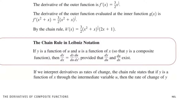If we use Leibniz notation, the chain rule can be written as dy/dx equals dy/du times du/dx, where y is a function of u, u is a function of x — that is, F is a function of G and G is a function of x. We are looking for the derivative of y with respect to x.